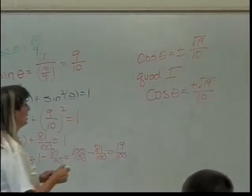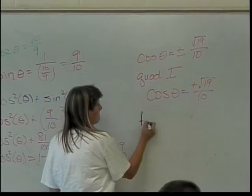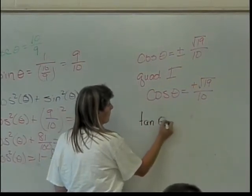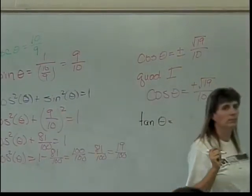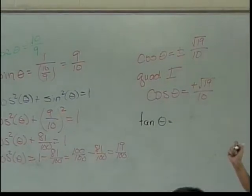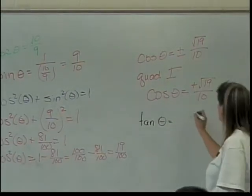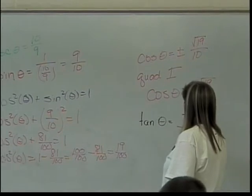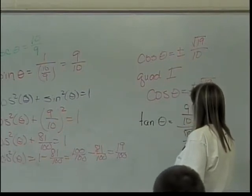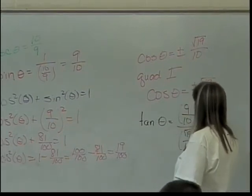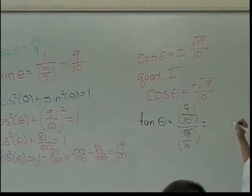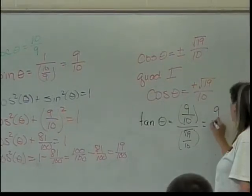What's the tangent of theta? Would be the sine over cosine, so that would be 9 over 10 over the square root of 19 over 10, which leaves me with 9 over the square root of 19.